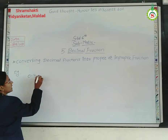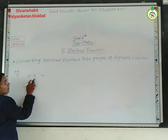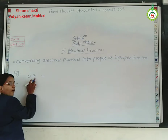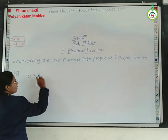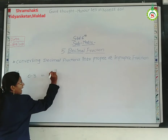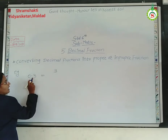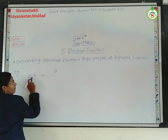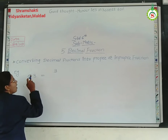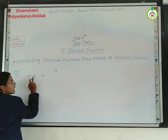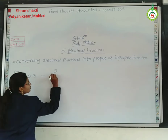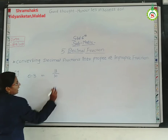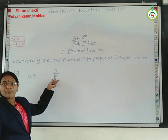So for 0.3, you write down 3 at the numerator, and then measure how many digits are after the point. Here, there is only one digit after the point, so you write down 10 at the denominator. So we get 3 upon 10.